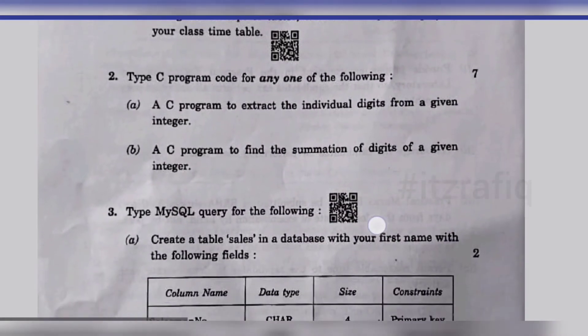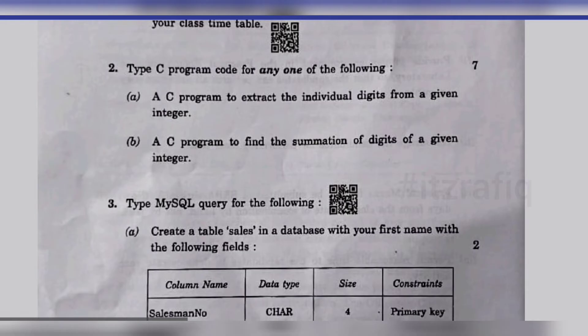Then number two is C programming. First: write a C program to extract the individual digits from a given integer. Second: write a C program to find the summation of the digits of a given integer. These two programs are essentially the same — just the question and a line or two differ. Both programs work the same way.